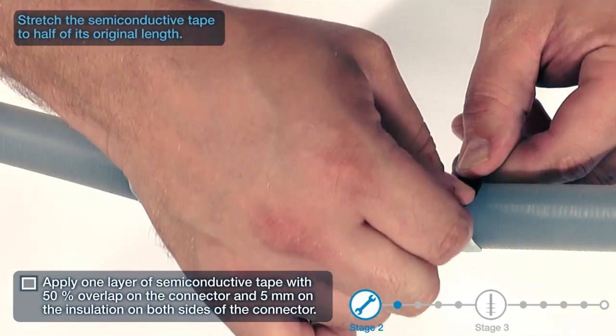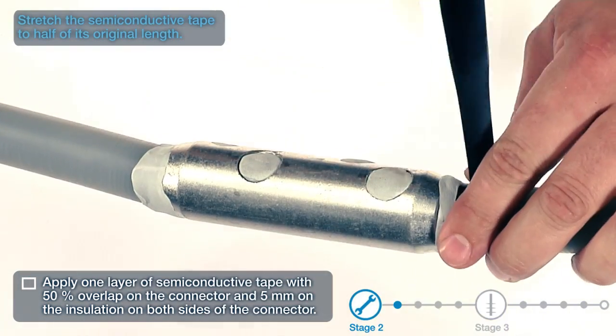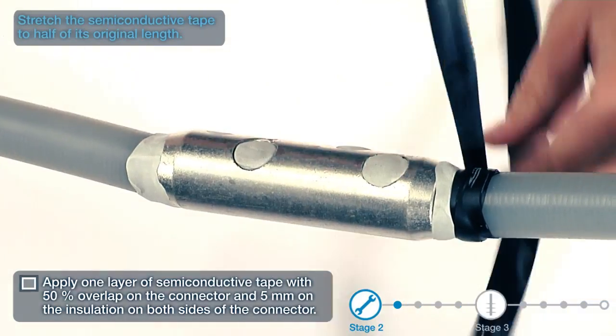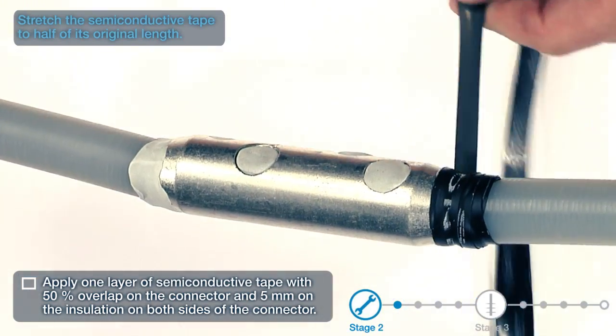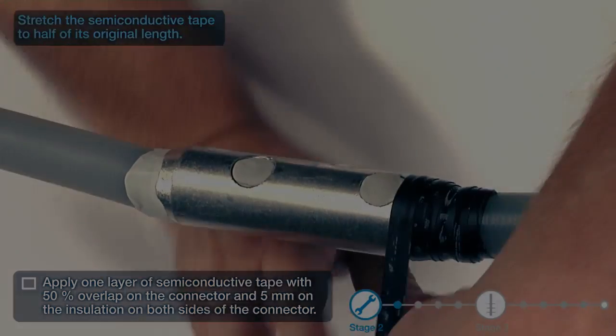Apply one layer of semi-conductive tape with 50% overlap on the connector and 5mm on the insulation on both sides of the connector. Stretch the semi-conductive tape to half its original length.